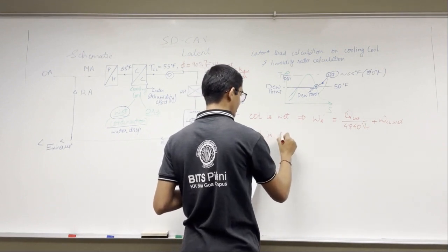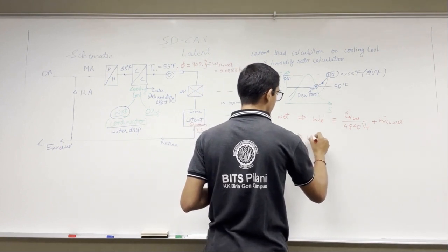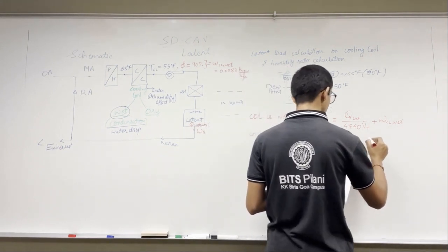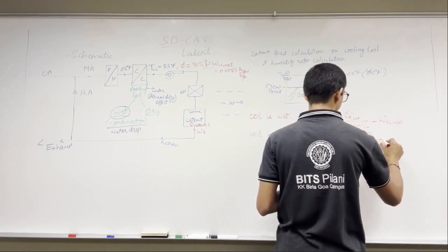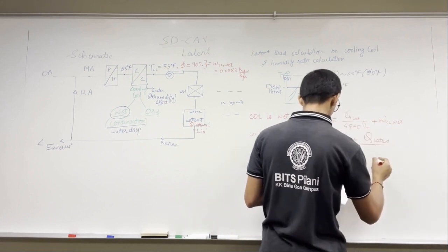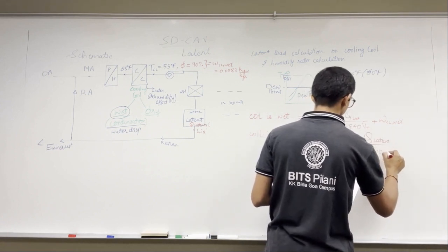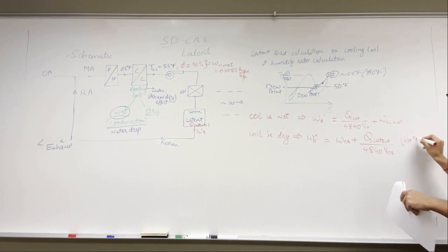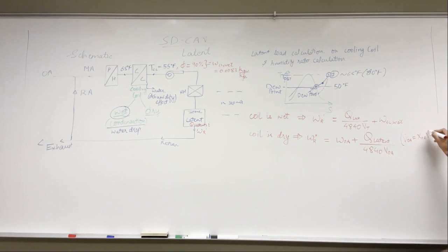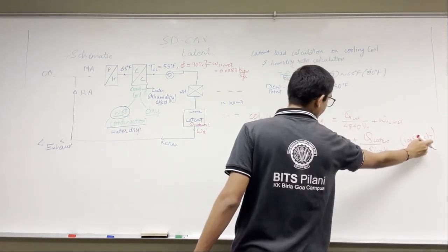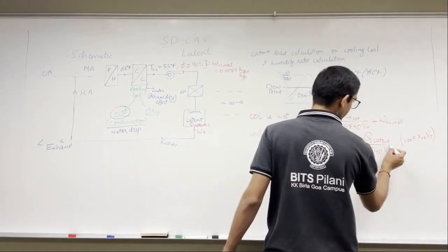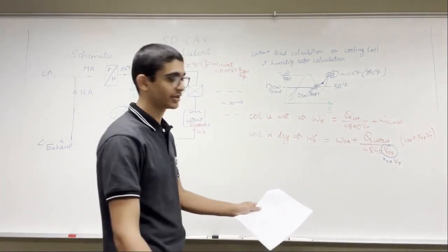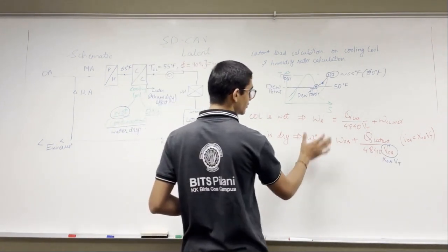If the cooling coil is dry, there is another condition: omega_r double prime, given as omega_OA plus Q_latent divided by 4840 times V_OA. V_OA is also equal to X_OA times V_T, since X_OA is defined as V_OA divided by V_T. So we can substitute X_OA times V_T in place of V_OA. If V_OA is given directly, we can use that value. Those are the two formulas we have.